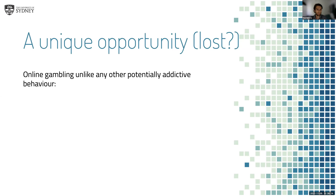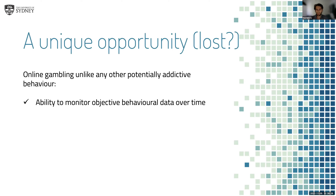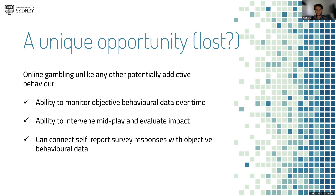Despite all these additional concerns associated with online gambling, there are also a number of unique opportunities, both in terms of research potential and developing new interventions that can reduce risky gambling behaviour. For example, we can monitor objective behavioural data over time using information contained in account data — we can see how often people are gambling, how much they're gambling, what they're gambling on, and what time of day. We can intervene while somebody's gambling, evaluate the impact, and connect self-report survey responses with this objective behavioural data.